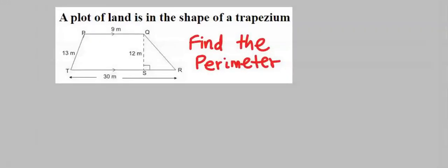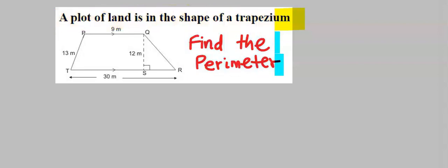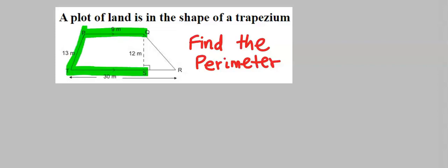A plot of land is in the shape of a trapezium. We are required to find the perimeter of the land. We know this side, we know this side, and we know this side.